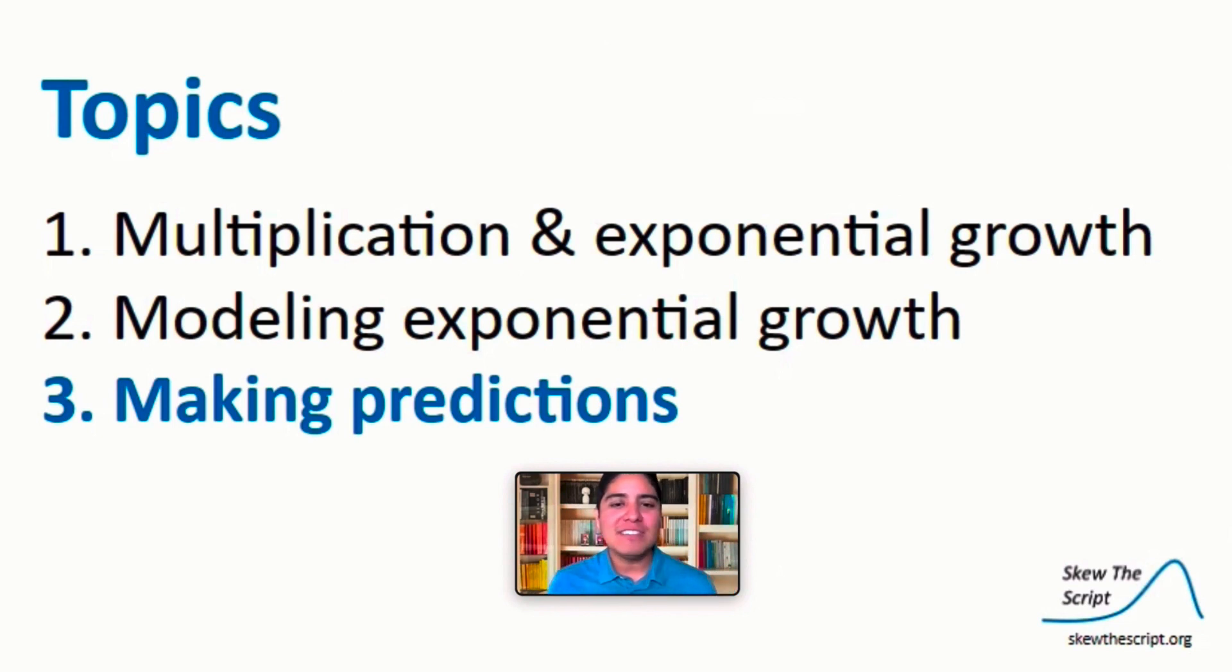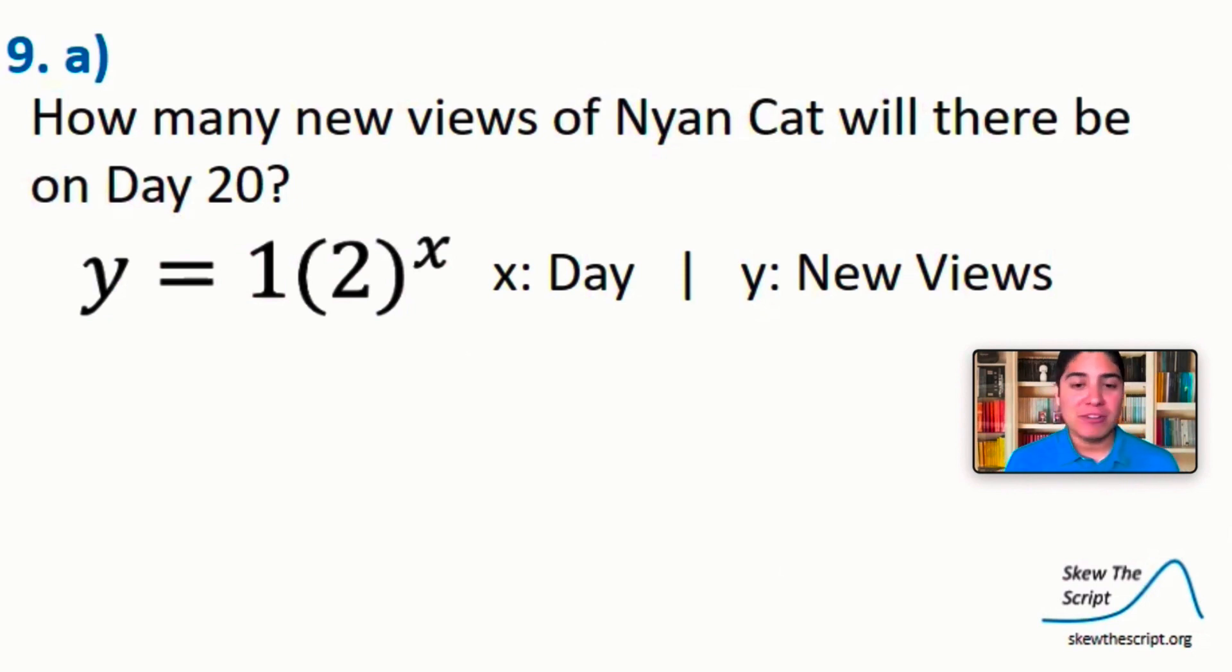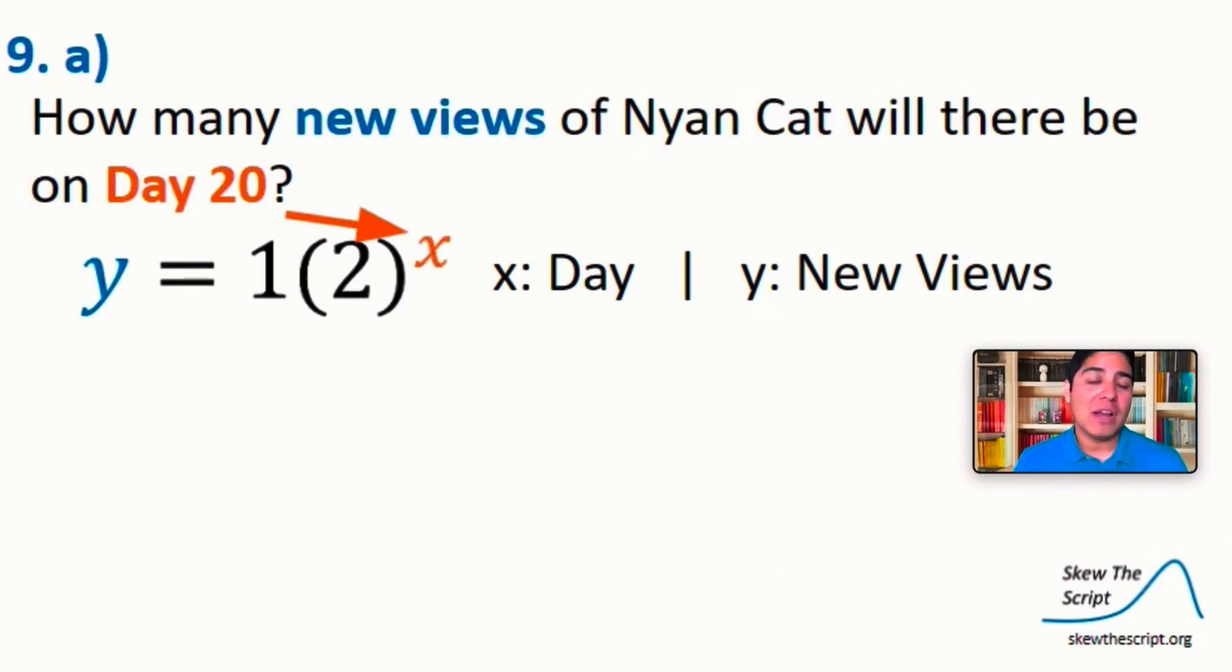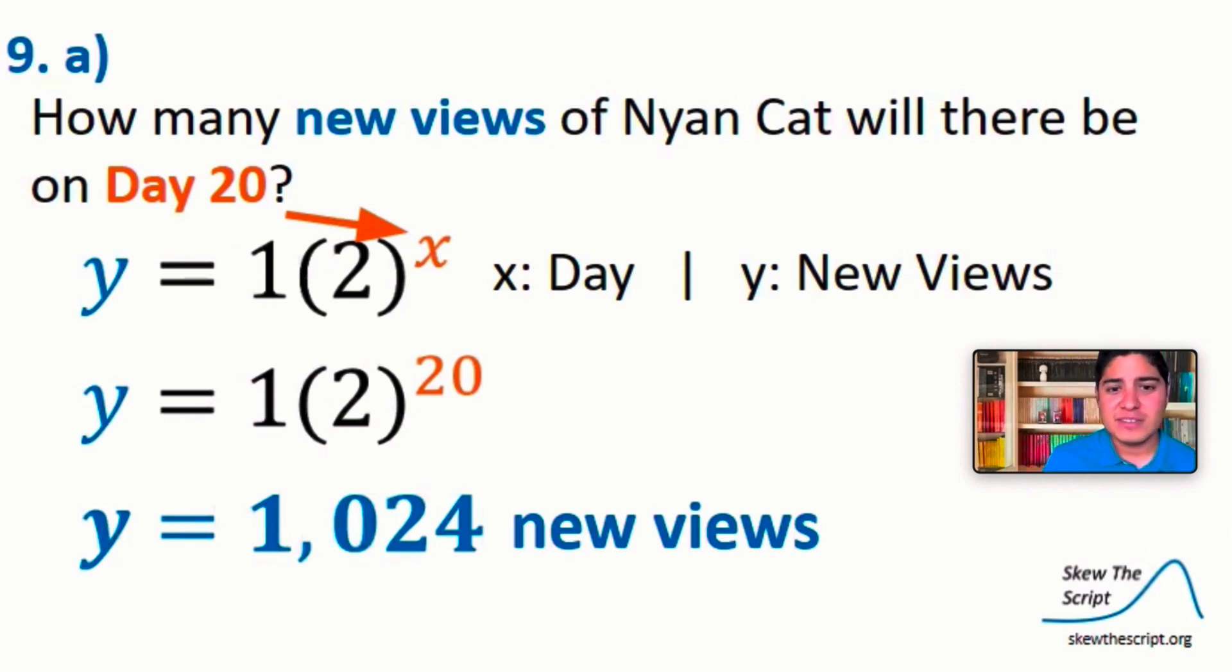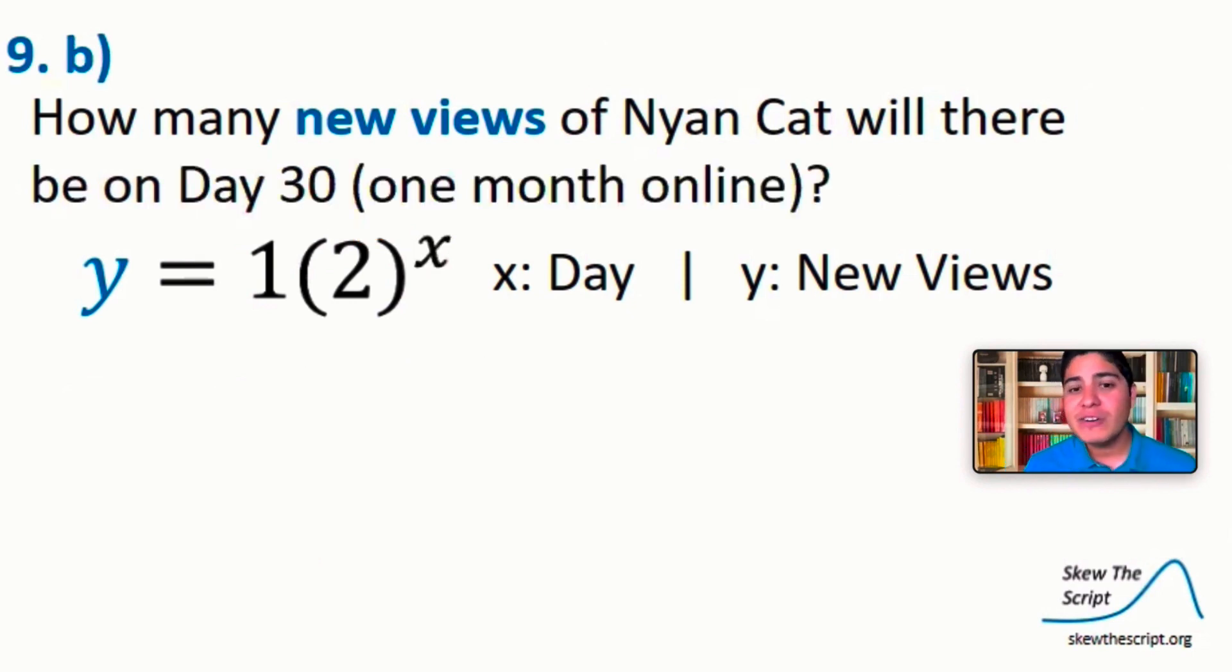Okay, now that we have our model, it's time to see why it's useful. Let's make some predictions. Let's start by making a prediction about day 20. This is problem 9a on your guided notes. Remember that our x variable represents the day and the y variable represents the number of new views. How many new views of Nyan Cat will there be on day 20? Well, let's start by substituting 20 in for x. We'll replace x with the 20. And we'll see that two to the 20th power is 1024. Now let's add some units to this. Based on our model, we should have about 1024 new views on the 20th day. I'm going to ask myself if this is a reasonable amount, and I think that it is.